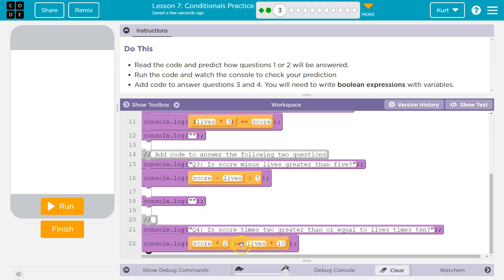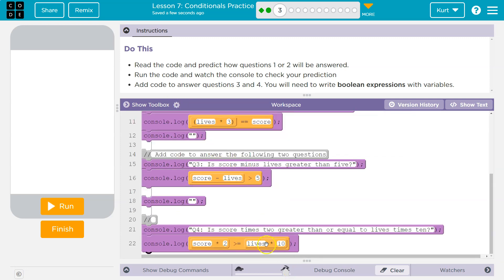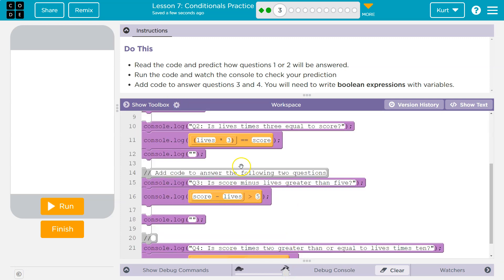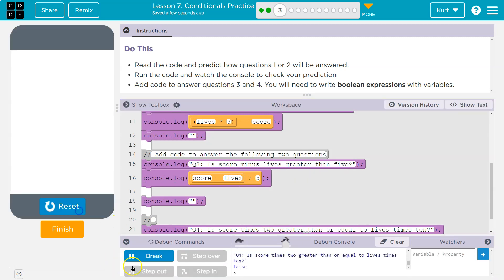So, is score multiplied by 2 greater than or equal to lives times 10? Well, score times 2 would be 10 times 2, so that's 20. Lives times 10, that would be 30. So no, that's not true. 20 is not greater than or equal to 30. Let's go ahead and run all of this.